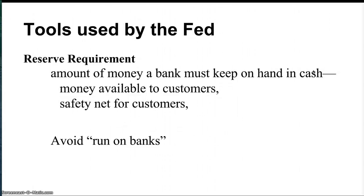There are three major tools the Federal Reserve uses, and we'll talk about them in order of importance. The first, and least important, is the Federal Reserve requirement — simply the amount of money banks must keep in their vaults at all times. The bank has to keep some money in the vault because you and I need to be able to withdraw it. Other than that, the bank would love to loan out as much money as possible, because the more it loans out the more profit it makes from interest.